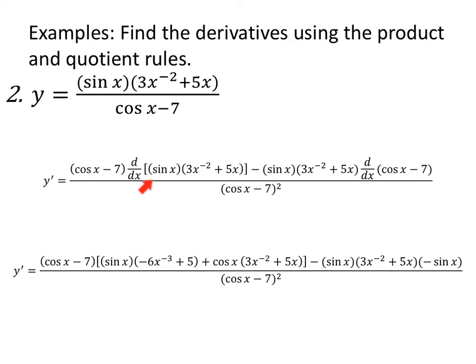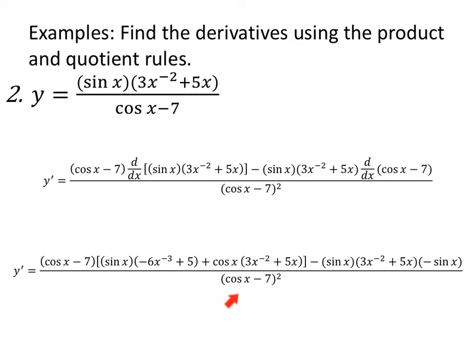Now we can go back and take these individual derivatives. Cosine of x minus 7. The derivative of a product — I'm going to use the product rule. It's sine of x times negative 6x to the negative 3 plus 5, so derivative of the second, plus second — 3x to the negative 2 plus 5x — times the derivative of the first; derivative of sine is cosine. Notice those are in brackets, keeping the product rule together. Minus sine of x times 3x to the negative 2 plus 5x. The derivative of cosine x minus 7 is negative sine of x. All over denominator squared.